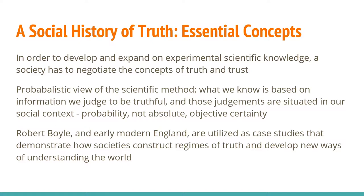This doesn't mean that objective reality doesn't exist, but by our nature we have to interpret it. A society can't work together to produce widely accepted knowledge unless we have some kind of agreed-upon interpretation of the truth. From this definition of truth, Shapin arrives at a probabilistic view of the scientific method. What we know is based on the information we judge to be truthful, and those judgments are situated in our social context. Science then is based on probability — what is probably true — rather than objective certainty. Shapin uses the development of experimental science in early modern England, and in particular Robert Boyle, as case studies that demonstrate how this work of building truth is accomplished.